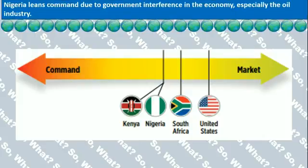Nigeria is considered mostly unfree, making it a mixed-but-leaning command economy. There is a lot of government interference in the economy. The major industry — oil — is run mostly by the government and international businesses, so local businesses and consumers do not see much results from that industry.